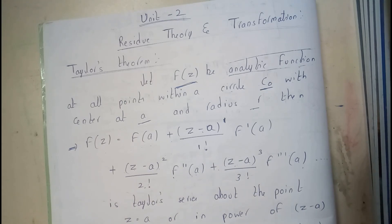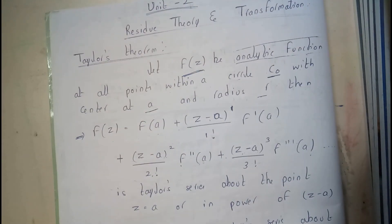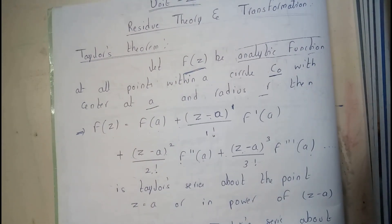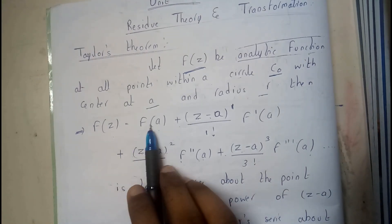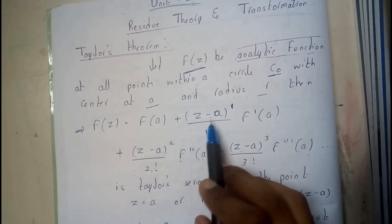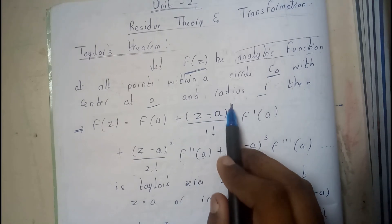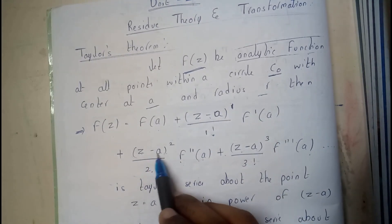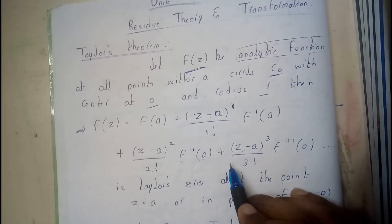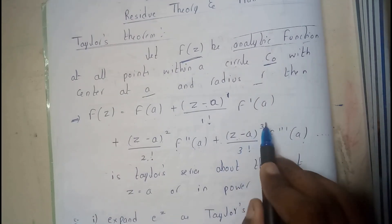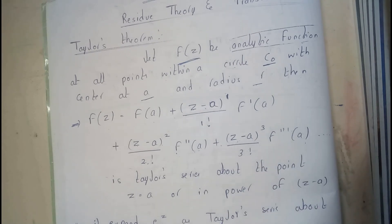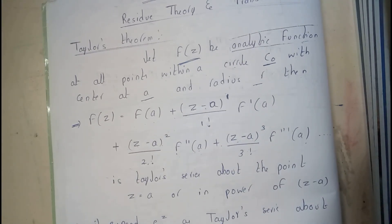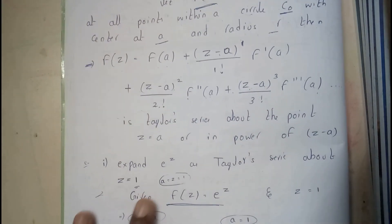So what is Taylor's series expansion? It's really simple. f(z) equals f(a) plus (z−a)¹/1! · f′(a) plus (z−a)²/2! · f″(a) plus (z−a)³/3! · f‴(a) and so on up to infinity. This is Taylor's series expansion, and there are some points to note.